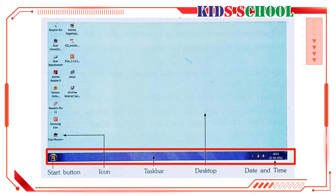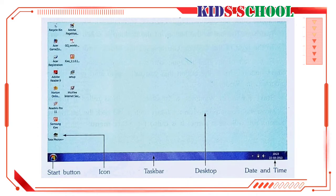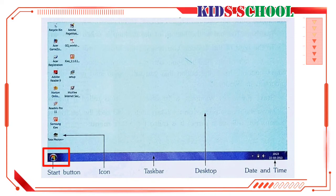Dear students, the bar at the bottom of the desktop is called the taskbar. To the right of the taskbar you can see the clock and date. To the left of the taskbar you can see a small button called the Start button. This is the button that you will use to start most of the programs in Windows.